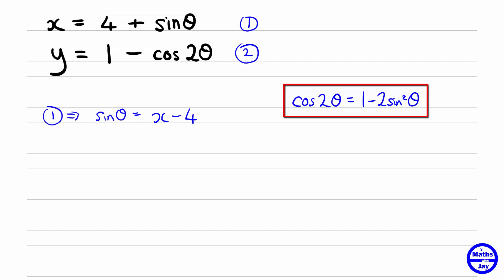And then all we need to do is write down y in terms of sin theta. So equation 2, we know that y is equal to 1 minus, now cos2 theta we know is 1 minus 2 sin squared theta. So 1 minus 1 just cancels out and then minus minus gives us a plus. So we know that y is simply 2 sin squared theta.